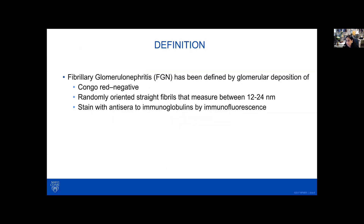What are the criteria that have been used to define fibrillary glomerulonephritis? It is characterized by glomerular deposits of Congo red negative material. These deposits stain with immunoglobulins, and most often it's polyclonal staining with IgG, with associated complements and Kappa and Lambda. On ultrastructural study, they have randomly oriented non-branching fibrils that generally measure between 12 to 24 nanometers, which is larger than typical amyloid fibrils.